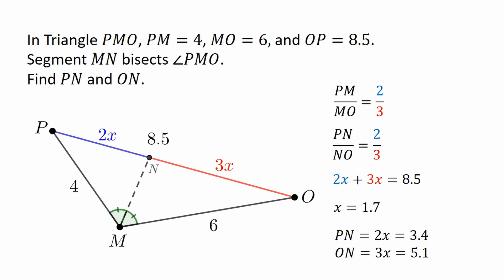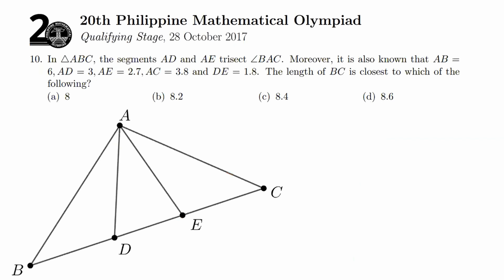Now, here's a problem from the 20th Philippine Mathematical Olympiad. The figure that's shown here was also given along with the problem. Here we go. In triangle ABC, the segments AD and AE trisect angle BAC. Moreover, it is also known that AB equals 6, AD equals 3, AE equals 2.7, AC equals 3.8, and DE equals 1.8. The length of BC is closest to which of the following. Here are the choices: 8, 8.2, 8.4, and 8.6.